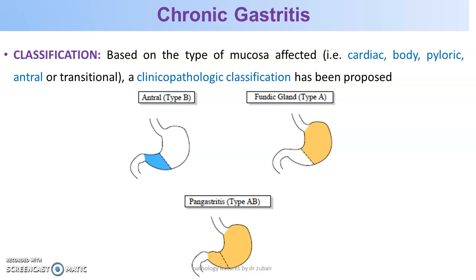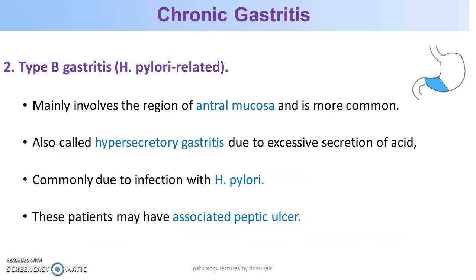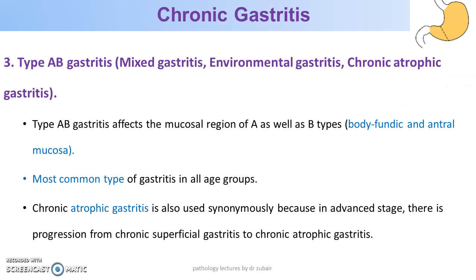Chronic gastritis is classified based on histologic pattern and site: antral type B, fundic type A, and pangastritis involving both areas. In type A gastritis, affecting the body and fundic mucosa, there are antibodies against parietal cells and intrinsic factor, depletion of parietal cells, impaired secretion of intrinsic factor leading to gastric atrophy, intestinal metaplasia, and pernicious anemia. Type B gastritis, mainly in the antral mucosa, is also called hypersecretory gastritis and is H. pylori-related; these patients may have associated peptic ulcer. Type AB involving body, fundus and antrum is the most common type of gastritis in all age groups.